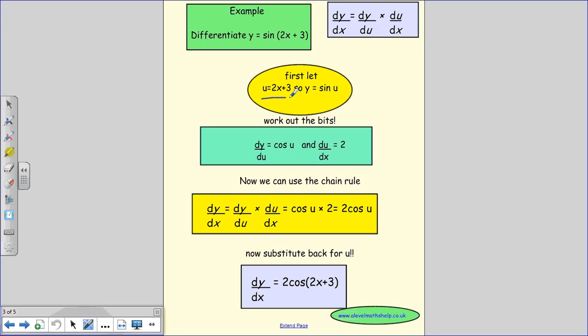We set u equals 2x plus 3, so the thing inside here we let become u, so y equals sine u. We then need dy by du, so we're going to differentiate this and when we differentiate sine we get cos, so that becomes cos u. Then we need du by dx, so we differentiate this to get 2.